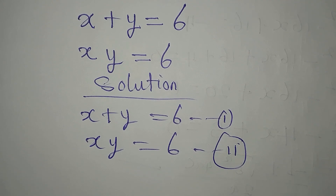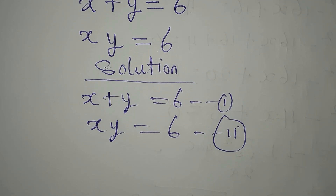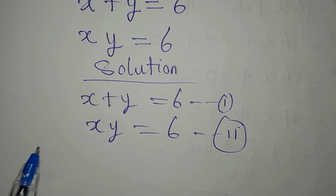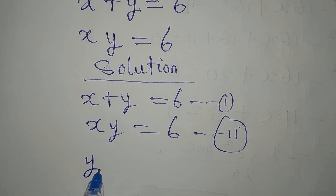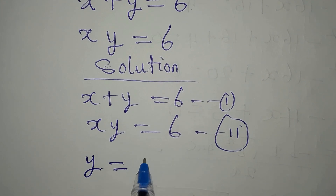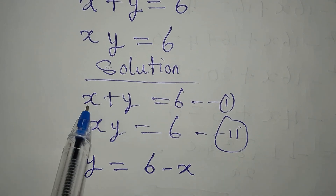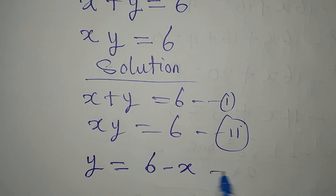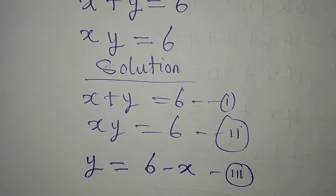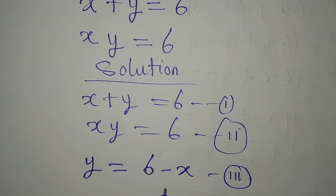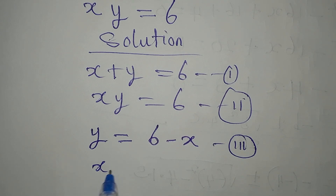What we'll do now is make something the subject from equation 1. Let's say that y is the subject, so we have y equals 6 minus x. You pick 6 before picking x, so this becomes equation 3. Equation 1 gives birth to equation 3. Now put equation 3 into equation 2.